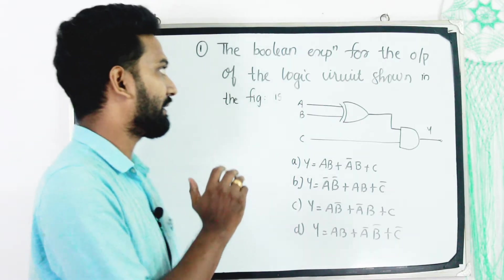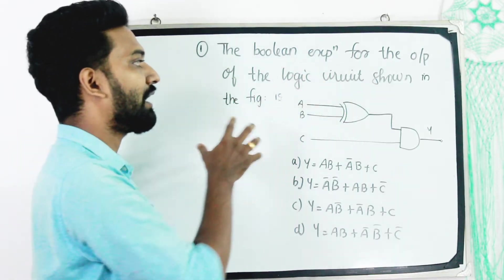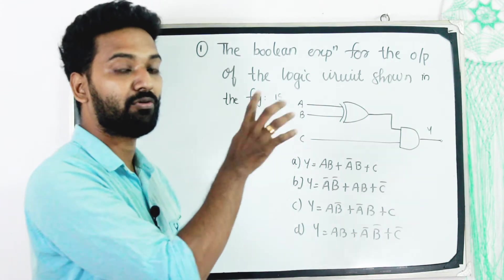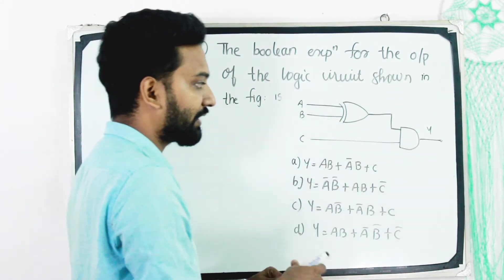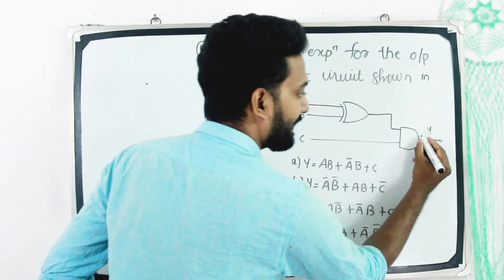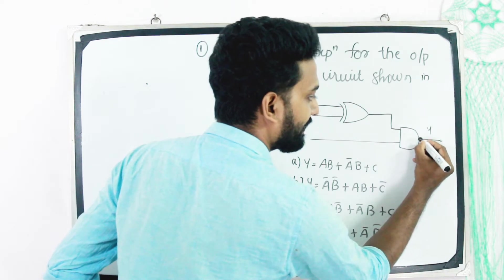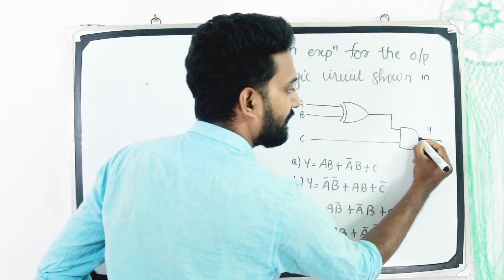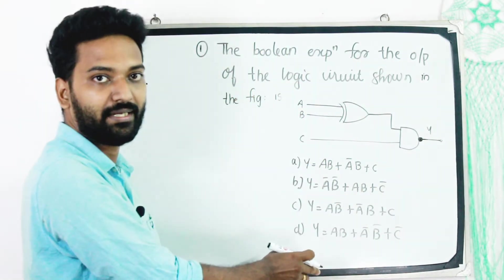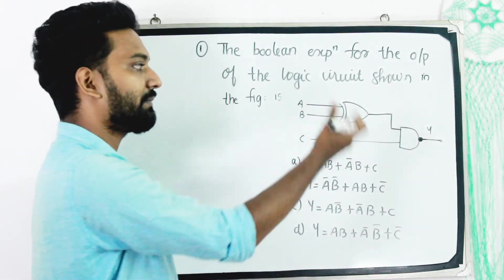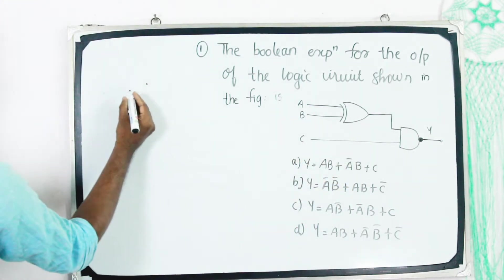First, we have the Boolean expression for the output of the logic circuit given by the circuit. We are going to talk about the output of the logic circuit and go back to the diagram.